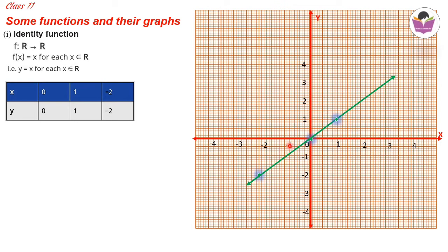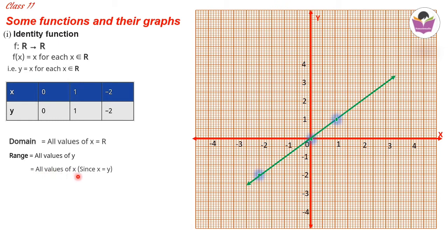For the identity function, the domain is all values of x, which equals ℝ. The range is all values of y — since y = x, the range also equals ℝ. Key points: the identity function is f(x) = x, its graph is a straight line through the origin, and both its domain and range are ℝ.